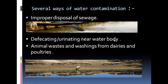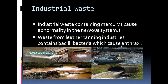Another reason is defecating or urinating near water bodies. Although Bihar state is now ODF, we still observe cases where people are defecating or urinating near water bodies, which contaminates the water. Additionally, animal waste and washings from dairies and poultries, if directly added to open water bodies, will also lead to water contamination.